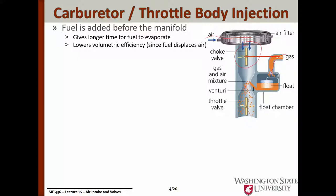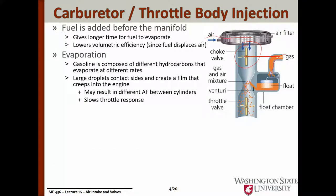We still need a valve upstream to help get the engine started. What the choke valve does is when we restrict the air with it, it drops the pressure behind that valve, and that even lower pressure is going to suck extra fuel relative to the airflow. The throttle valve downstream of the carburetor is actually constricting both the fuel and air together, so the ratio of fuel to air doesn't change with the throttle valve, but the total flow rate of both does change.